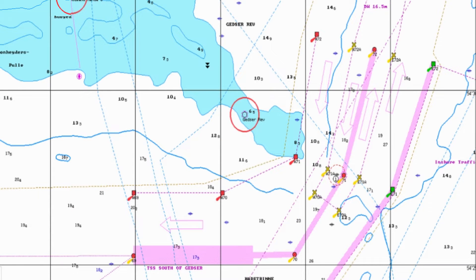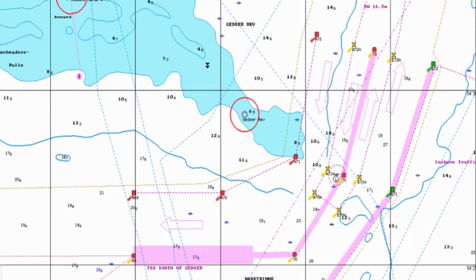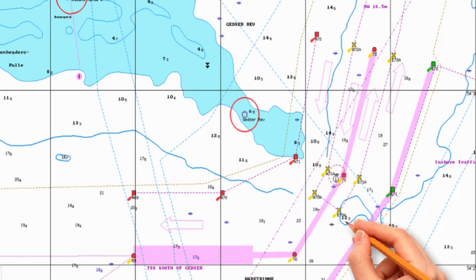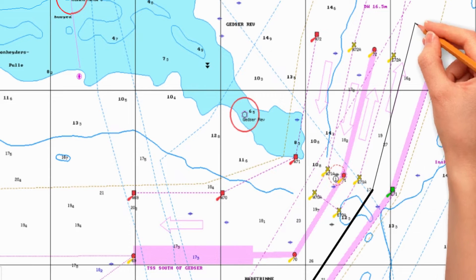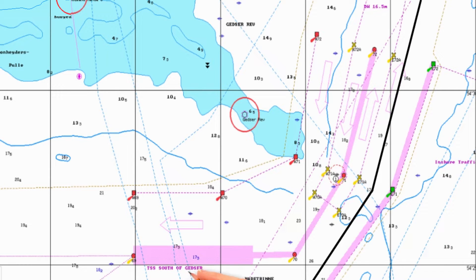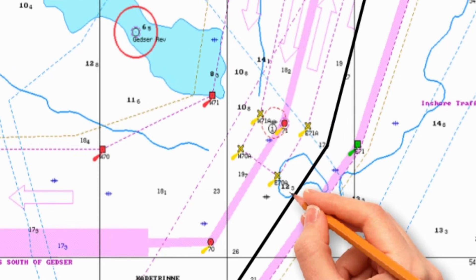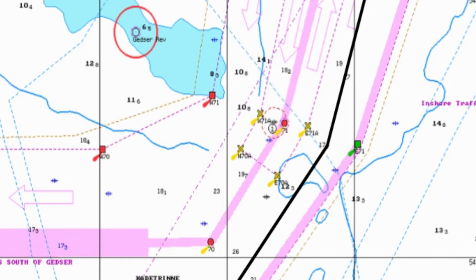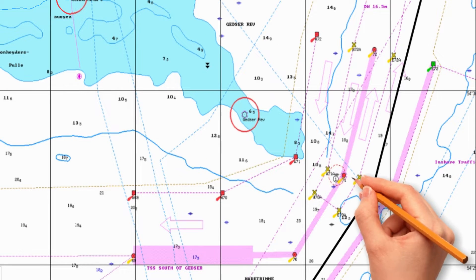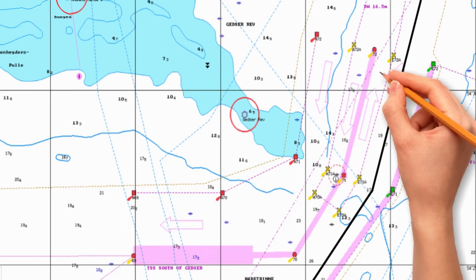The numbers you can see in this chart represent depth measurements indicating water depth in meters at specific locations. For this specific location, the depth of the water is 23 meters; here is 18.1 meters, and in this location the depth is 12.3 meters. Let us assume you are making a passage plan and your ship will pass through TSS south of Getzer. Upon checking, 12.3 meters will be the lowest depth sounding your ship will pass through the entire transit.